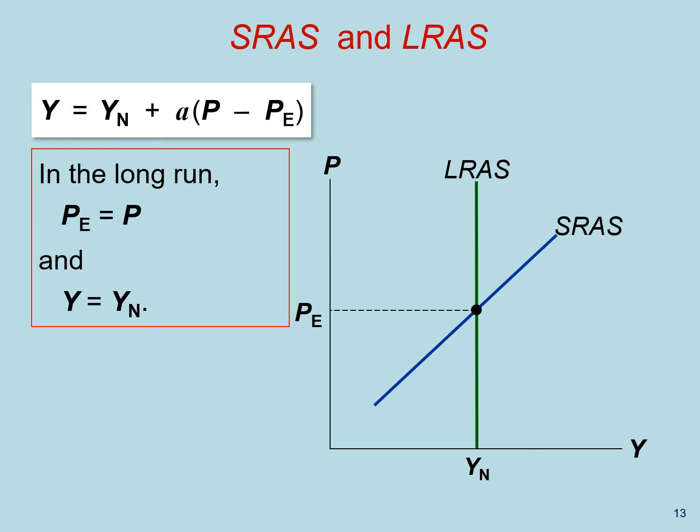But in the long run, expectations catch up to reality and prices will equal price expectations, and therefore the level of output is going to be equal to its natural rate, just like in the classical model.